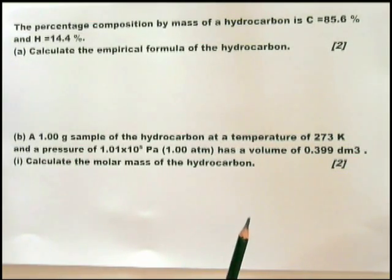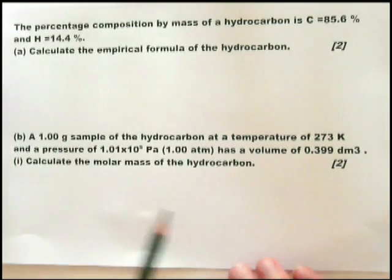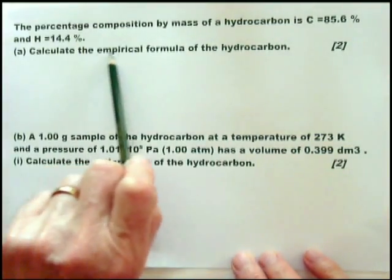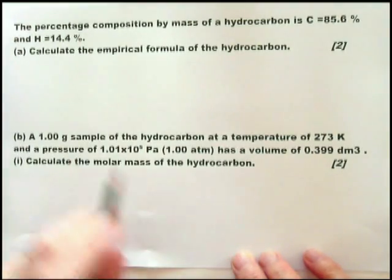Essentially, you're asked first to calculate the empirical formula of the hydrocarbon. There is a way of doing that: the percentage composition by mass is carbon 85.6% and hydrogen 14.4%.